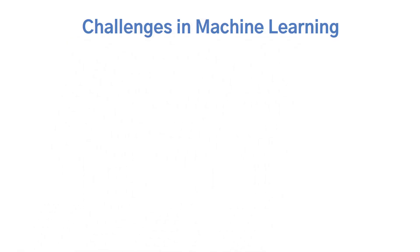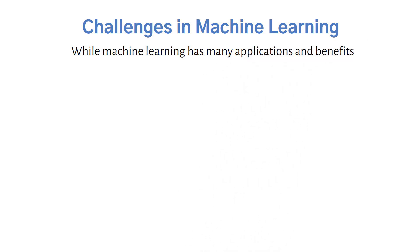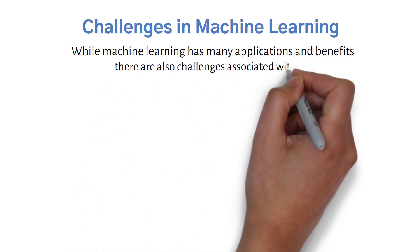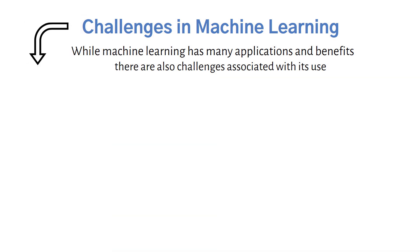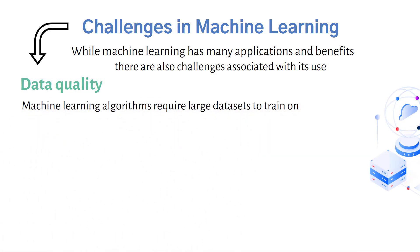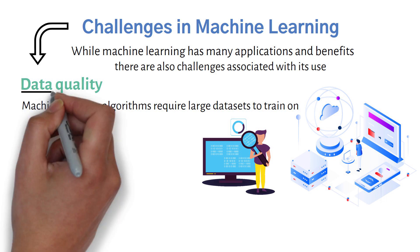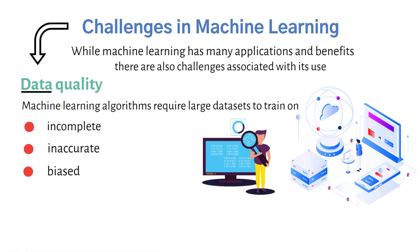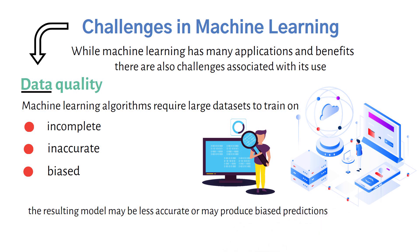Challenges in machine learning: while machine learning has many applications and benefits, there are also challenges associated with its use. Data quality: machine learning algorithms require large datasets to train on, but the quality of the data can significantly impact the accuracy of the resulting model. If the data is incomplete, inaccurate, or biased, the resulting model may be less accurate or may produce biased predictions.